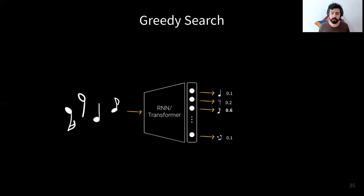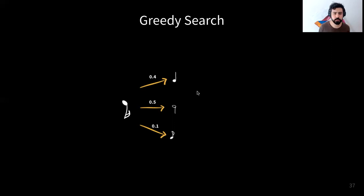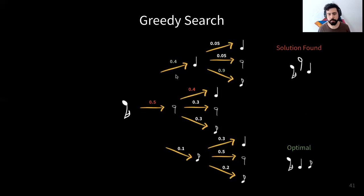This process is called greedy search. Using a tree search structure: starting with a given note, assuming only three possible notes in our vocabulary, greedy search picks the one that maximizes likelihood at each step. However, greedy search can miss the optimal solution — for example, a node with 0.9 probability can be hidden behind an initially less optimal branch, and greedy search completely misses it.